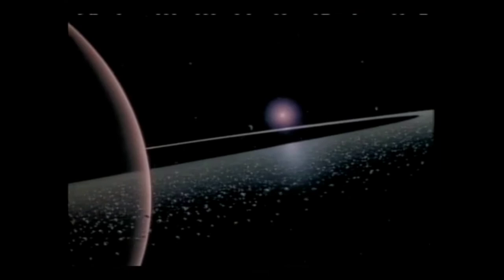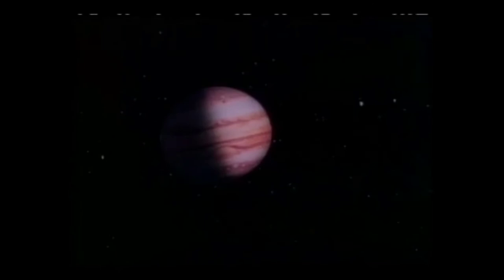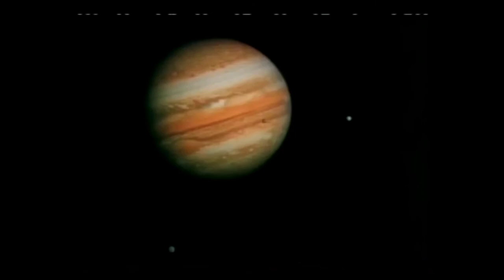As Voyager passed Jupiter, it discovered a thin ring about the planet. What is its composition? We know there are 16 moons. Are there more? Several of the satellites are composed partially of water ice. One is violently volcanic. How did these bodies form and what is their history? What can this giant planet tell us about the history of our solar system?